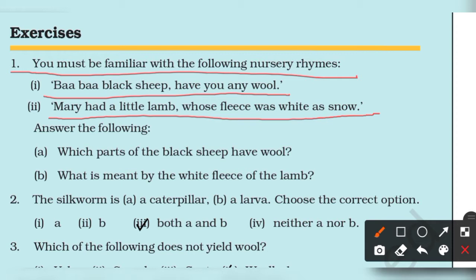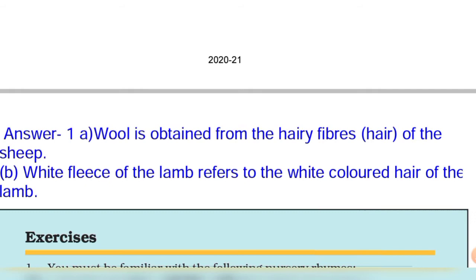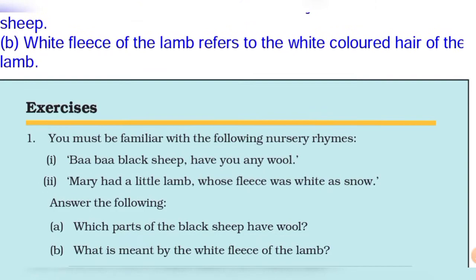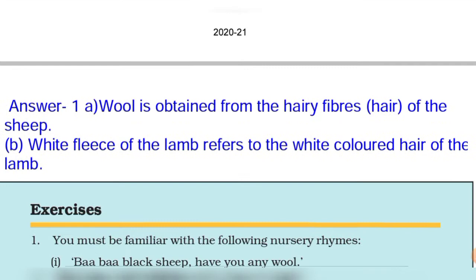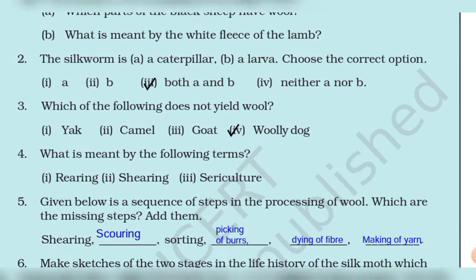So why are these lines given? Answer the following: The first question asks which part of the black sheep has wool, and the second question is what is meant by the white fleece of the lamb. The answer to the first is that wool is obtained from the hairy fiber of the sheep. The answer to the second is that the white fleece of the lamb refers to the white colored hair of the lamb.